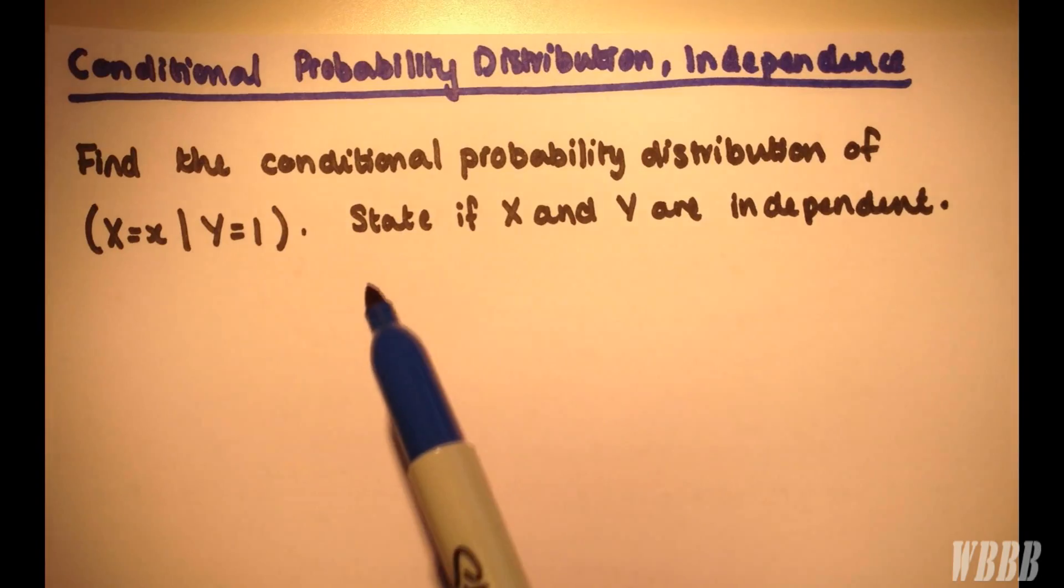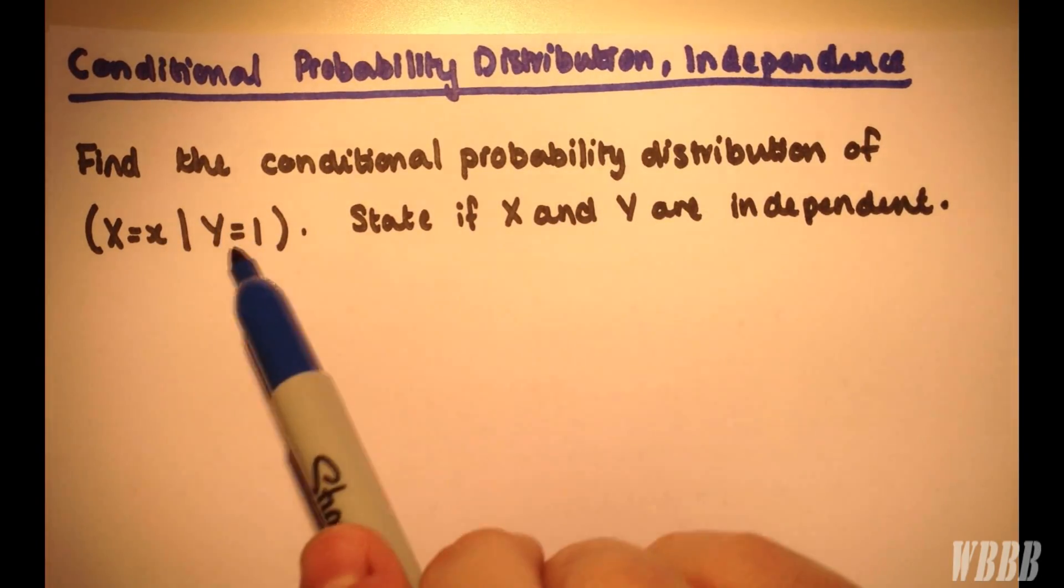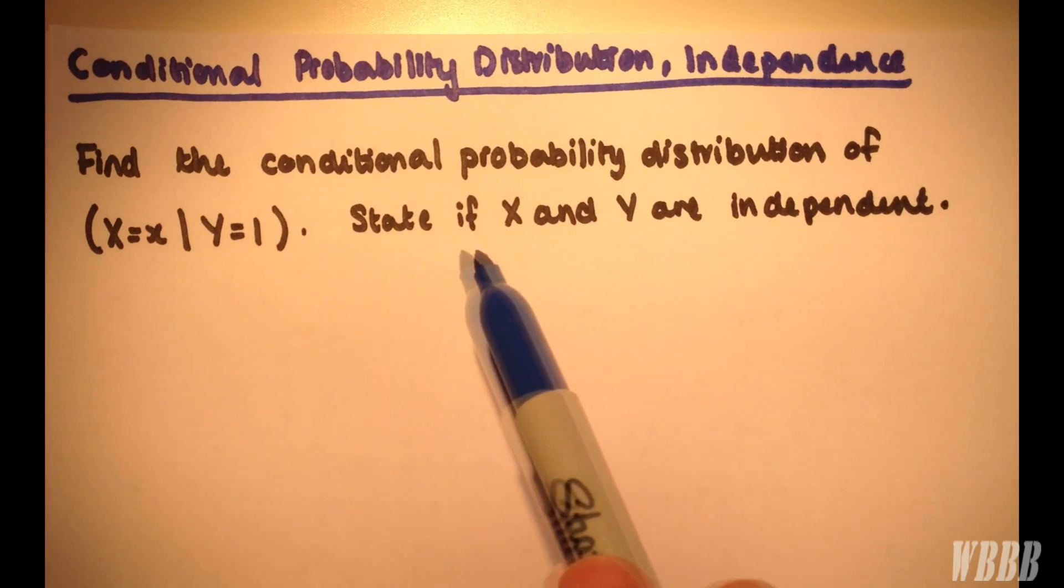So the question is to find the conditional probability distribution of X where Y equals 1, and then we're going to state whether they're independent or not. So from our previous example,